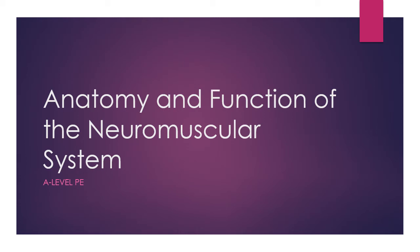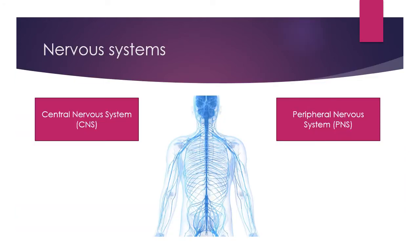This is an A-level PE video on the anatomy and function of the neuromuscular system. We have two parts of the nervous system. Firstly, we have the central nervous system, otherwise known as the CNS.